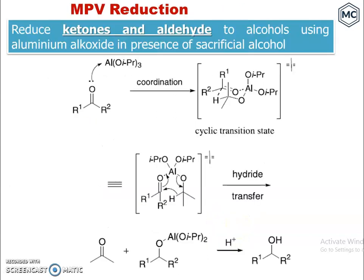MPV reduction is exactly the reverse of Oppenauer oxidation — it reduces a ketone to an alcohol. We start with the ketone, which forms a coordinate covalent bond with aluminum.